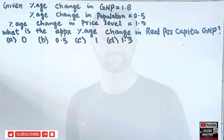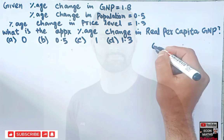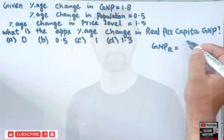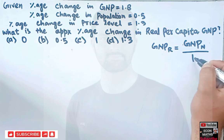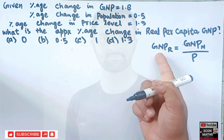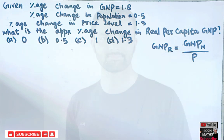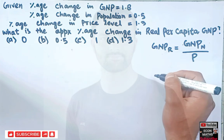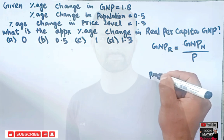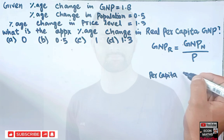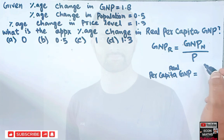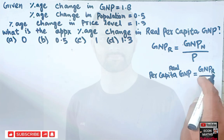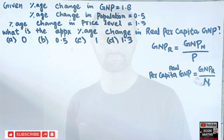First, what is real GNP? Let's call it G. Real GNP is simply equal to nominal GNP divided by the deflator, which is also called the price level. First we calculate the percentage change in real GNP, and after that we calculate per capita real GNP, which is simply equal to real GNP divided by population — let's denote population by N.